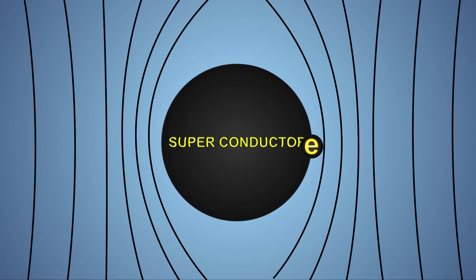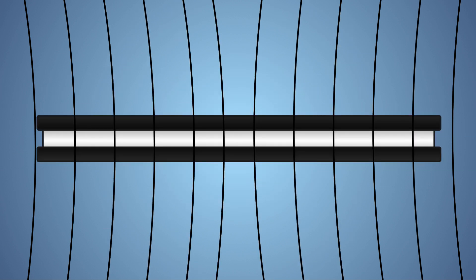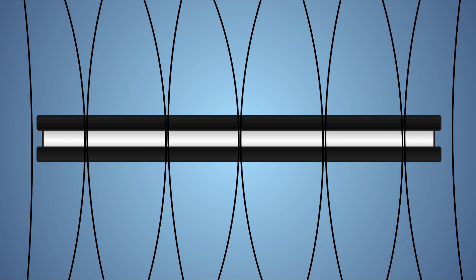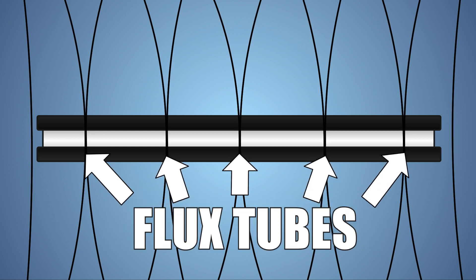However, since our superconductor is extremely thin, the magnetic fields generated by the magnets will penetrate the superconductor in discrete quantum amounts. The quantum amounts of magnetic field that penetrate the superconductor are pressed into a cylindrical shape known as flux tubes.